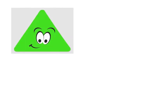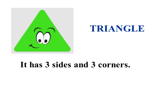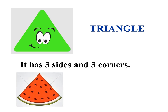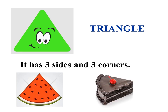Children, now see — what is it, green in color? It is a triangle. It has three sides. Triangle has three sides and three corners. Can anyone give an example for a triangle? I will tell you two examples. If we cut a watermelon, it will be in a triangle shape. Also, if we cut a cake into equal pieces, we will get a triangle shape.